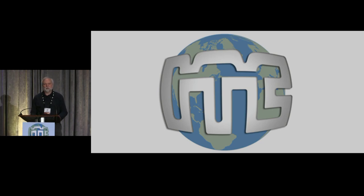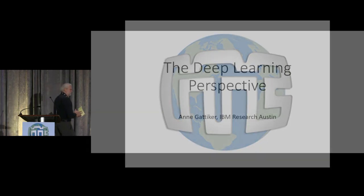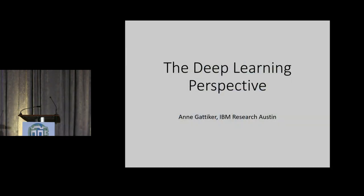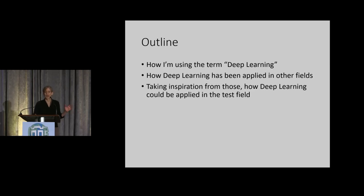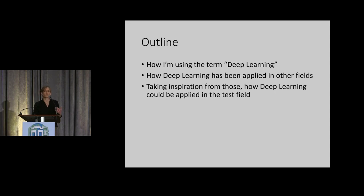Anne Gattacher is a principal research staff member with IBM. She's been at IBM for quite some time after completing her PhD at CMU, and she's been doing a lot of research in AI-related topics. She will introduce us to the general broad concepts of AI. I promised that I would give a deep learning perspective here today — I'll mention how I'm using the term deep learning, talk about how it's been applied in other fields, and then ponder how it could be applied in the test field.